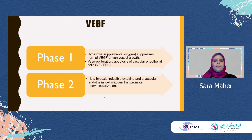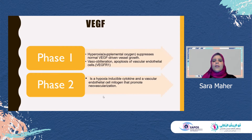We'll talk now about the different cytokines and their role in the development of ROP. First, the vascular endothelial growth factor. In phase one, the hyperoxia because of supplemental oxygen will suppress the normal VEGF-driven vessel growth, and this will result in vaso-obliteration and apoptosis of the vascular endothelial cells.